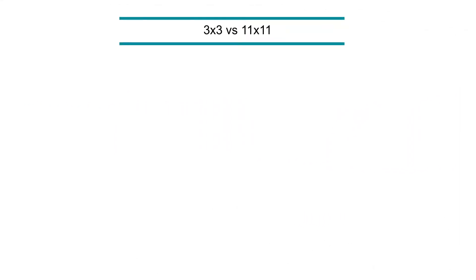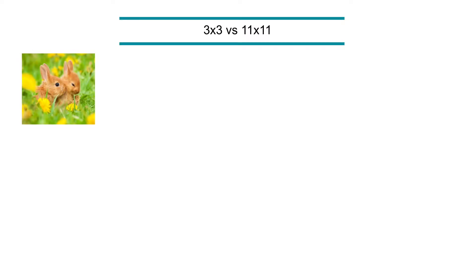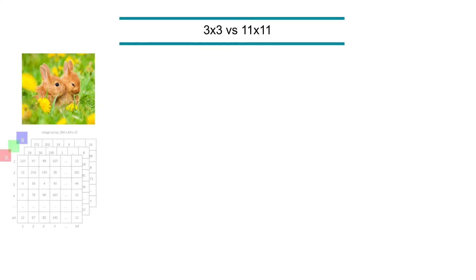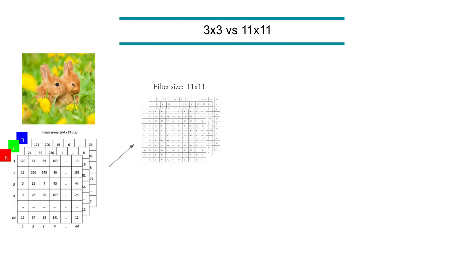Everything starts from these 3x3 and 11x11 convolutions. It's AlexNet actually. We have an image — all the pixels, all the numbers, all the channels. And then we have actually two options: one is applying a bigger size filter like 11x11, or a smaller size filter.